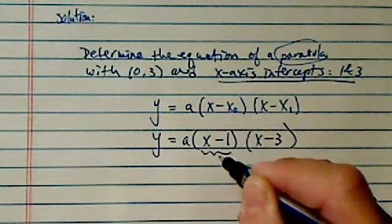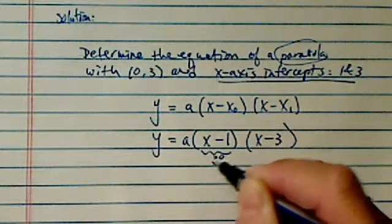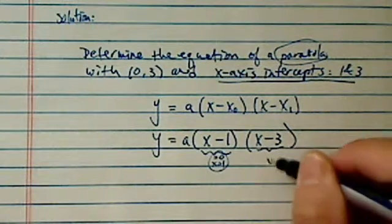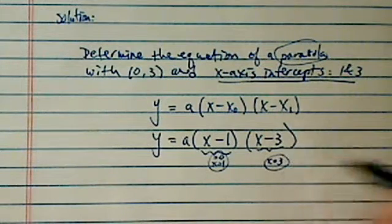When I set this one equal to 0, then I'll have x equal to 1. This is intercept 1. Set this one equal to 0, I have x equal to 3. That's intercept 2.